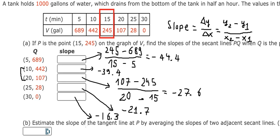And we know negative 39.4 and we have negative 27.6. Then we divide by 2, and we get the final answer: negative 33.5. And that's it, the answer for question B.